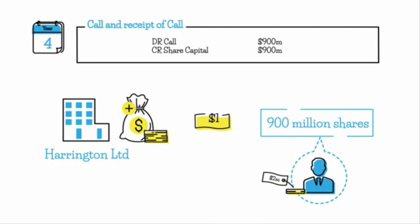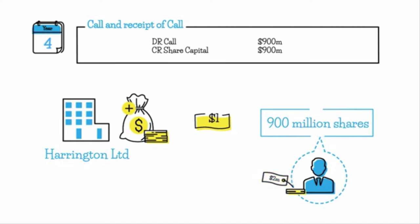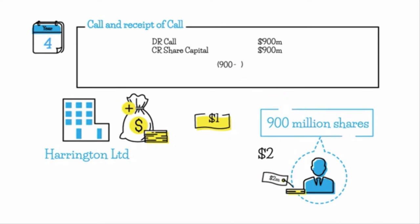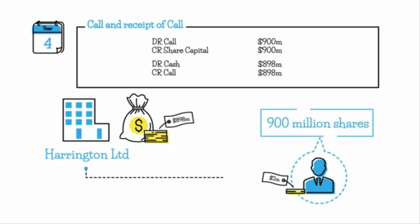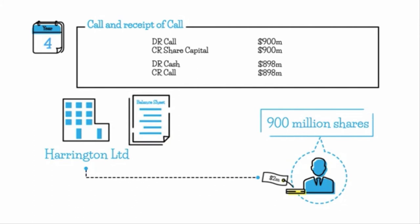The last journal entry records the receipt of call money. The call money was received except from one shareholder with a parcel of 2 million shares. To calculate call monies received: 900 million minus 2 million shares times $1 = $898 million. So we debit cash $898 million and credit call $898 million. The call account is not yet closed — we may contact that shareholder — and the remaining call balance stays on the balance sheet until it's paid or forfeited.